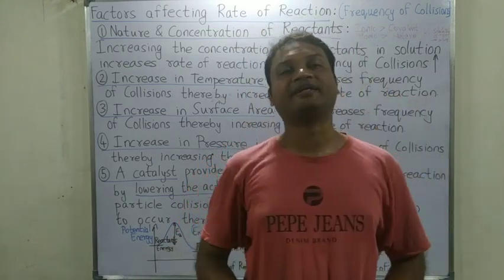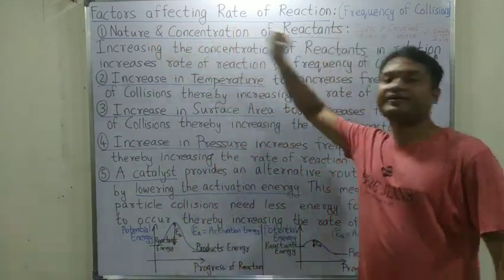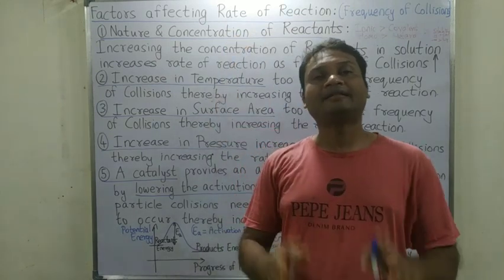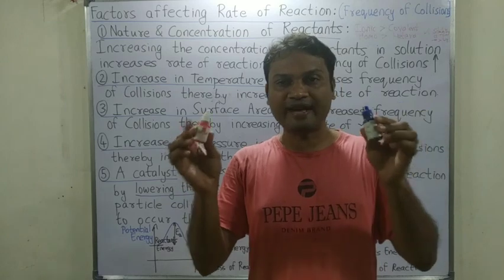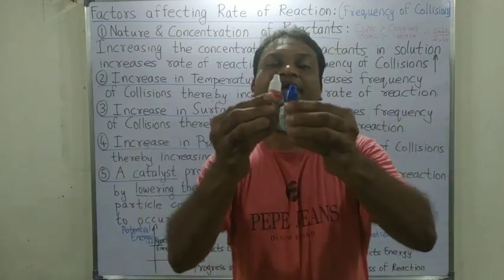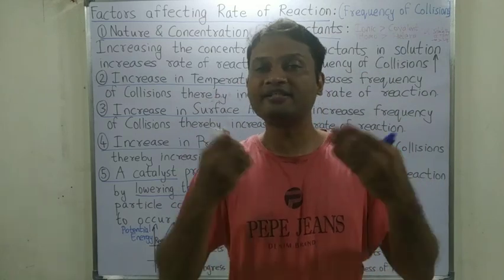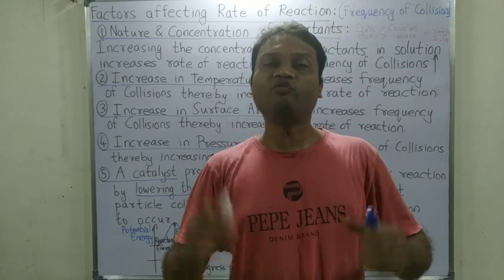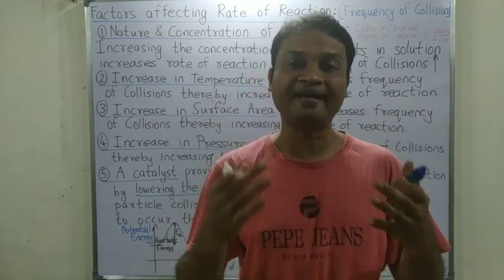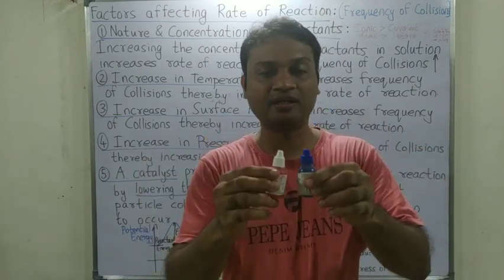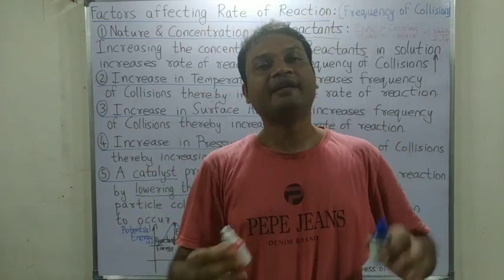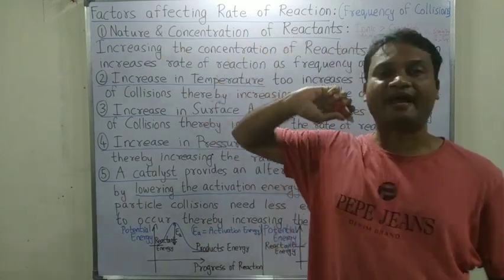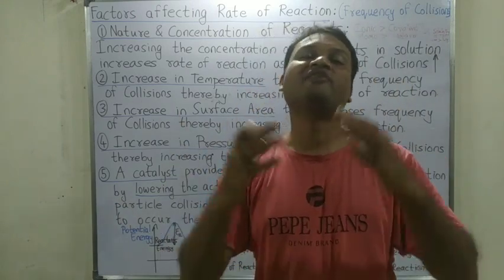Another factor related to the nature of reactants is the stability of the product formed. If two reactants combine to form a very stable product, the reaction will be fast, because every system tends toward stability. If the reactants are less stable and they form a highly stable product, the reaction will be faster. So the dependence on nature and concentration of reactants is clear — more concentrated the reactants, faster will be the reaction.